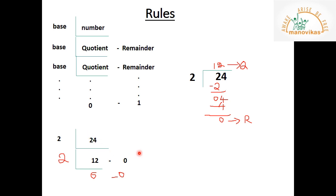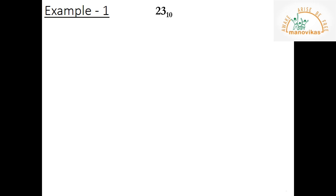Don't forget to write the base value of the number system. When you write a binary value, you must represent its base value, which is base 2. Now, how to convert decimal number 23 to binary. As per the rule, write the number 23 and divide it by 2. When you divide 23 by 2, the quotient will be 11 and the remainder will be 1.